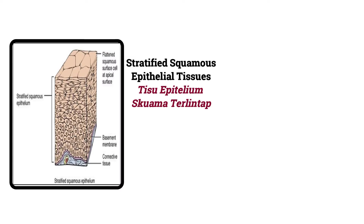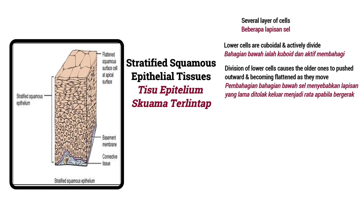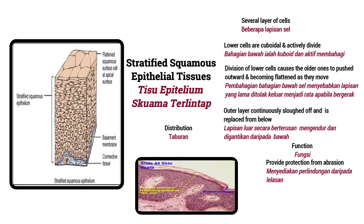Stratified squamous epithelial tissue consists of several layers of cells. The lower cells are cuboidal and actively divide. Division of lower cells causes the older ones to push outwards, becoming flattened as they move. The outer layer continuously sloughs off and is replaced from below. Function: provides protection from abrasion. Distribution: skin.